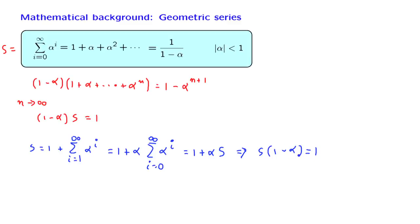And now, by moving 1 minus alpha to the denominator, we get again the same expression. So this is an alternative way of deriving the same result.